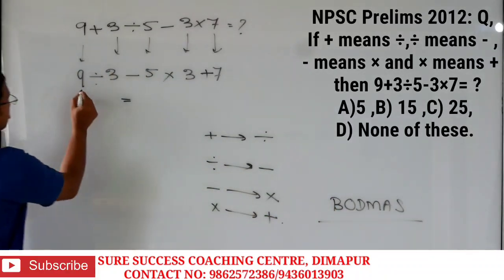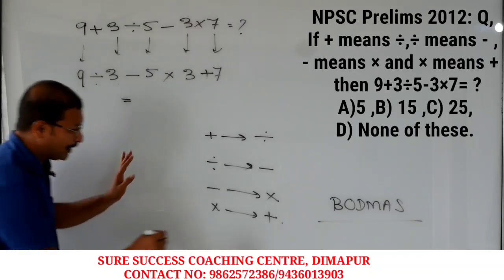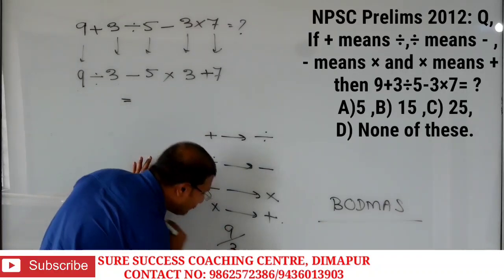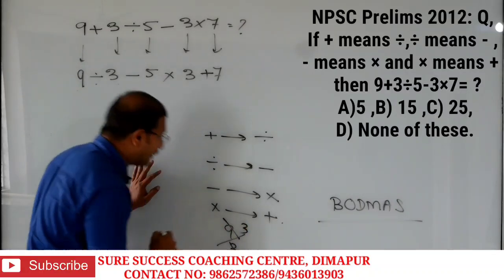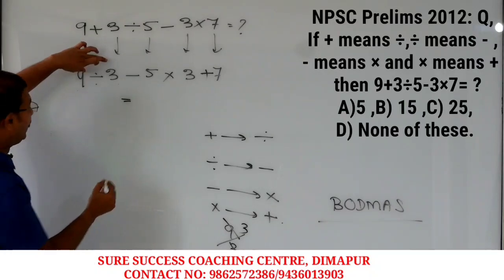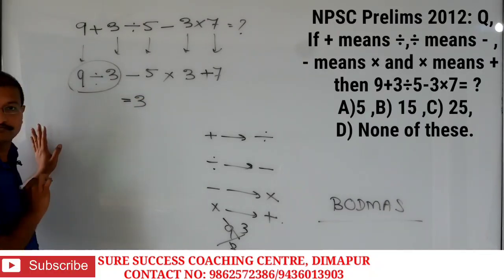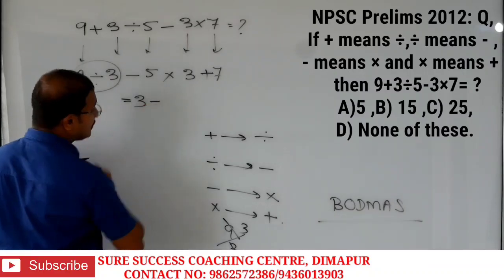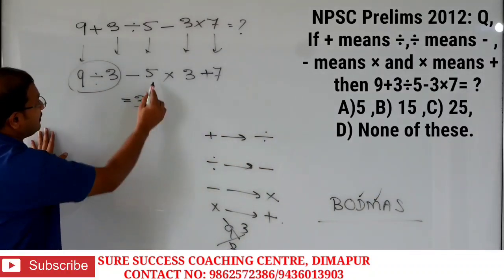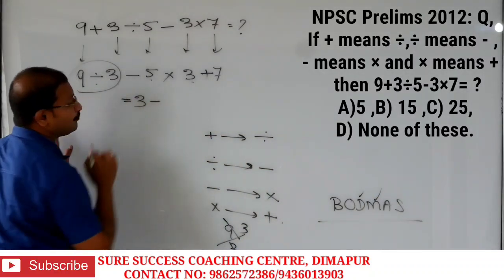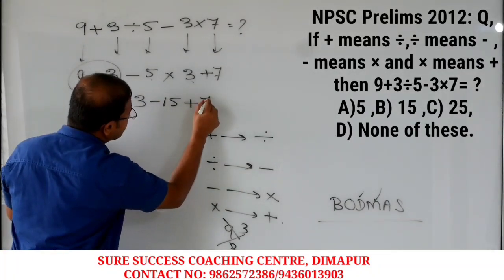Division first: 9 divided by 3. 9 divided by 3 — 3 threes are 9, so we get only 3. This step is done. After completing division, we move to multiplication: 5 into 3, 5 threes are 15. After that, plus 7.